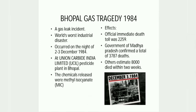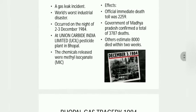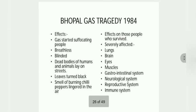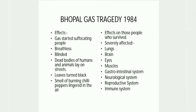The Bhopal gas tragedy is the world's worst industrial disaster. There was a leakage of methyl isocyanate gas in a pesticide industry, resulting in the death of many people. The gas started suffocating people, people went blind, leaves of trees burned, and it also affected organs like lungs, brain, and eyes.